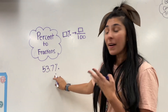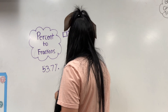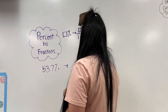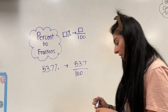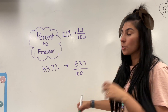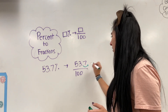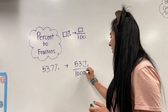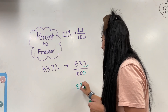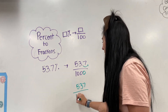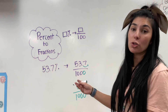Now let's do one with a decimal. If I have 53.7%, I make that my numerator — 53.7 over 100 — because it's a percent. However, there's a decimal in the numerator that I need to move. I jump it one time to get it out of the way, so I add one zero at the bottom. My final answer is 537/1000.